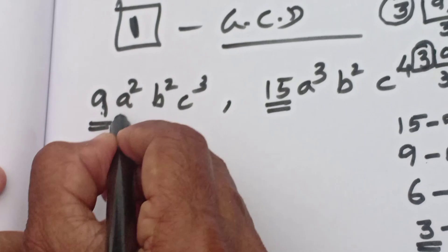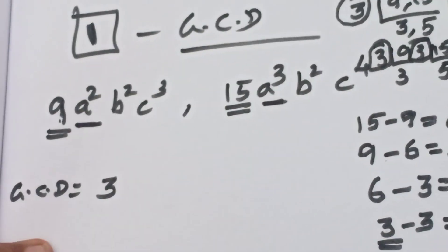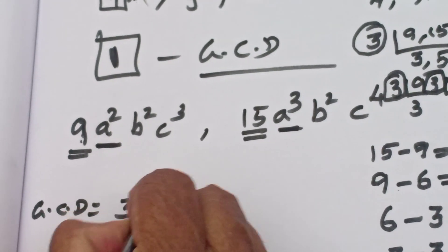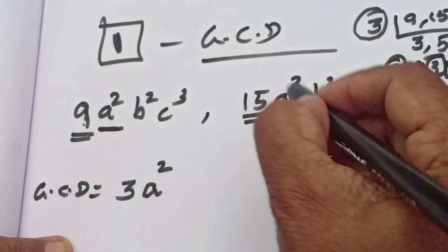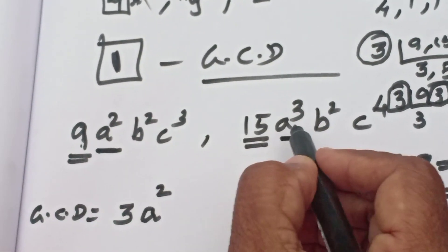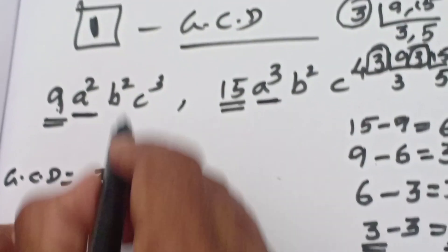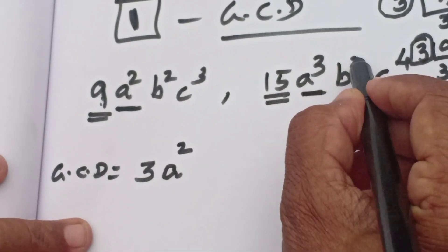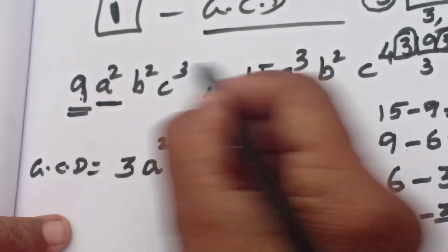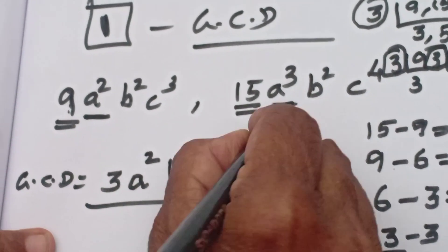We use common base here. A squared and a cube — the lowest is a squared. B squared and b squared — b squared. C cube and c to the power of 4 — c cube. So the GCD is 3 a squared b squared c cube.